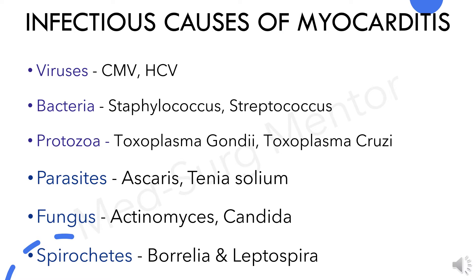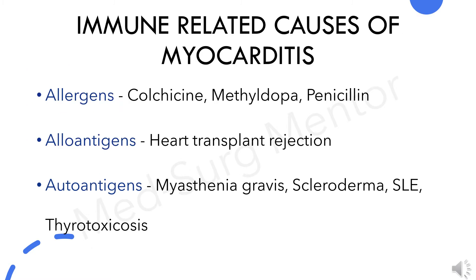And spirochetes like Borrelia and Leptospira. Among these, viruses are the most common cause of infectious myocarditis. Immune-related causes of myocarditis include allergens like colchicine, methyldopa, and penicillin; alloantigens in heart transplant rejections; and autoantigens present in conditions like myasthenia gravis, scleroderma, systemic lupus erythematosus, and thyrotoxicosis.